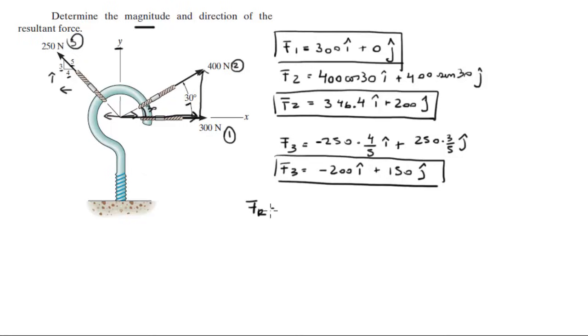Now FR is calculated by adding the x's together and the y's together. And when you add them up you're going to get that this is equal to 446.4i plus 350j.